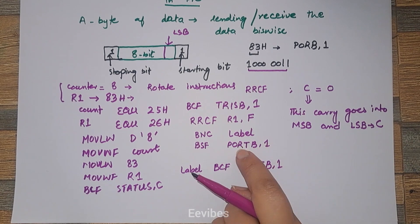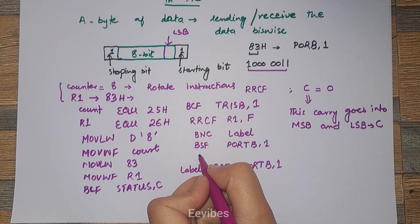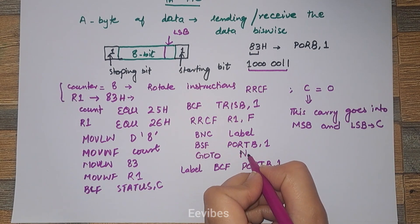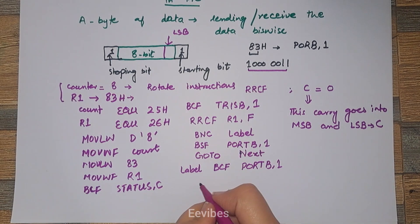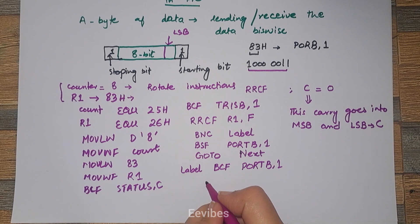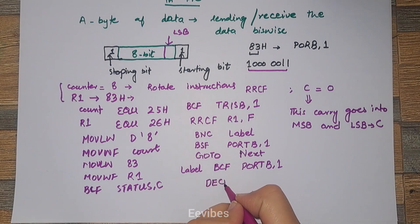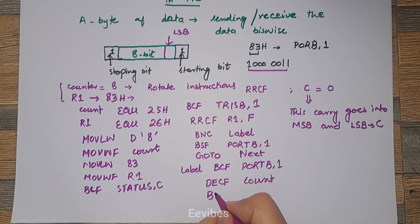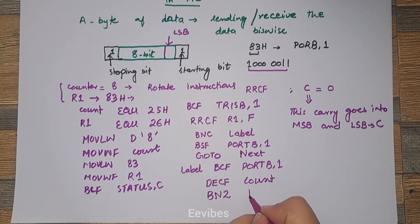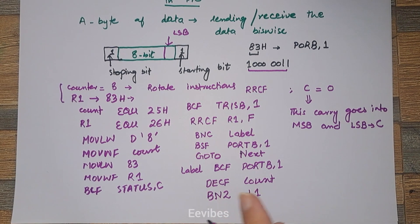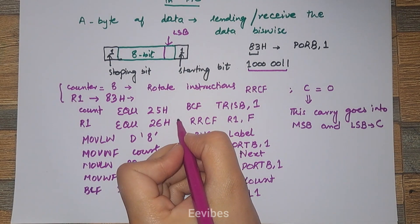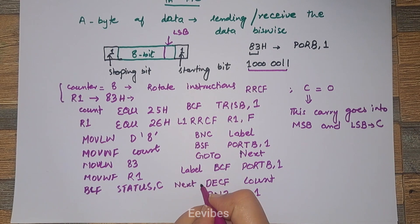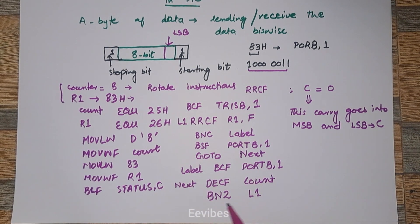Otherwise, BSF PORTB, 1 transmits a 1 at the first pin of Port B, and then we go to the next label. In the next label, we decrement the value of COUNT using DECFSZ COUNT, F. Branch not zero (BNZ) sends us back to label 1, where we rotate the next bit. Label 1 is placed before the rotate instruction, and the next label is placed before the decrement.